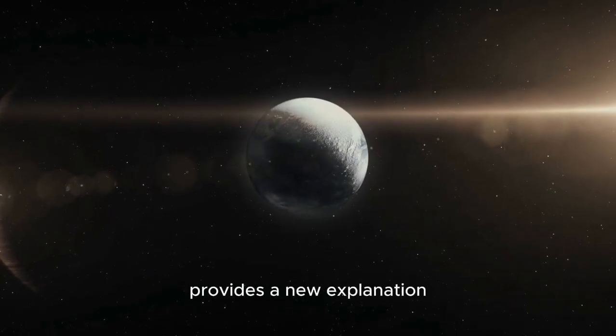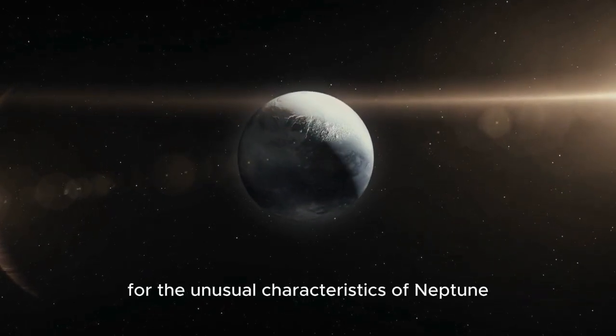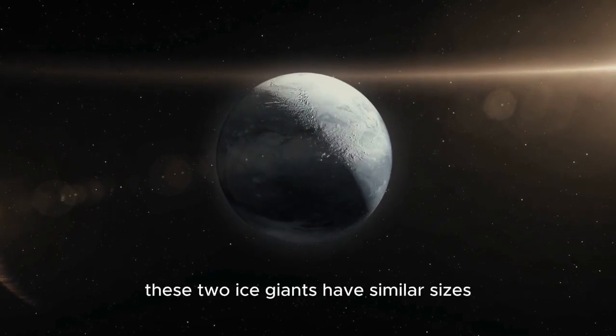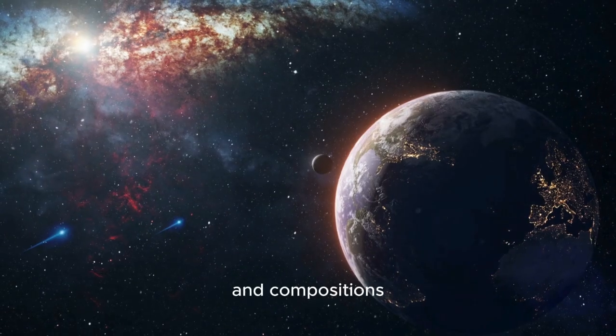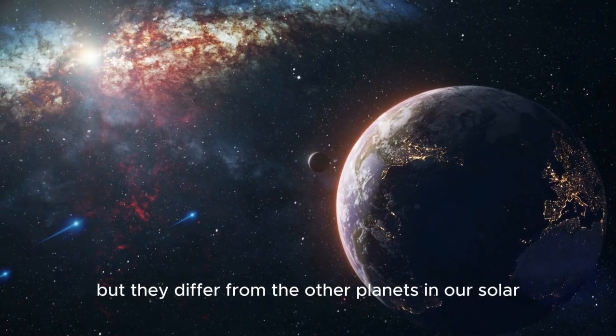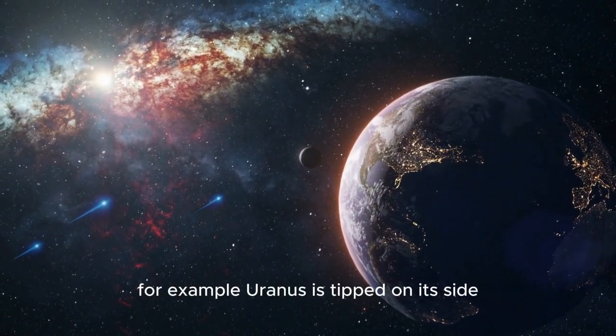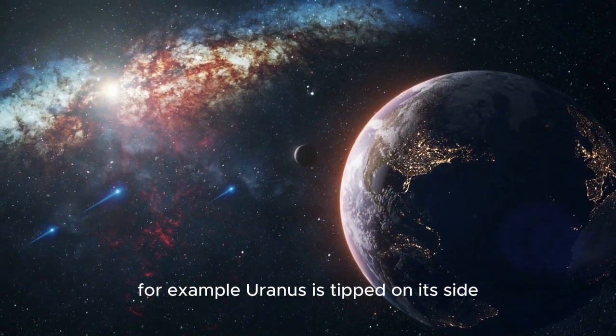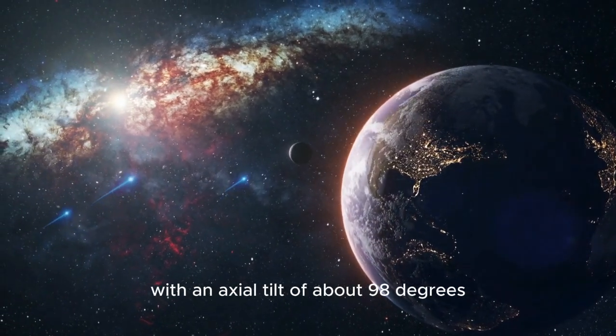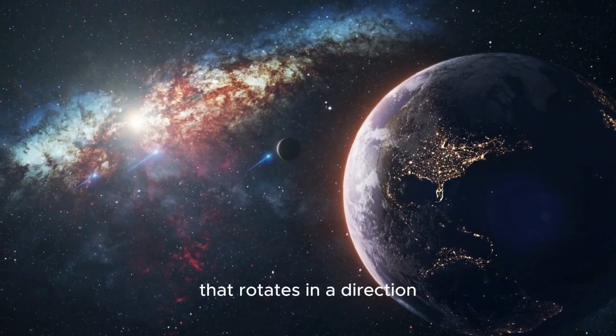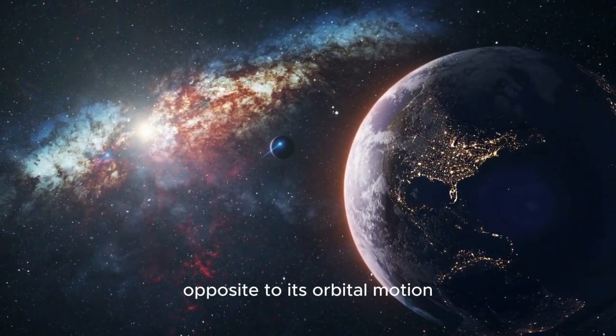This theory also provides a new explanation for the unusual characteristics of Neptune and Uranus. These two ice giants have similar sizes and compositions, but they differ from the other planets in our solar system in important ways. For example, Uranus is tipped on its side, with an axial tilt of about 98 degrees, making it the only planet in the solar system that rotates in a direction opposite to its orbital motion.